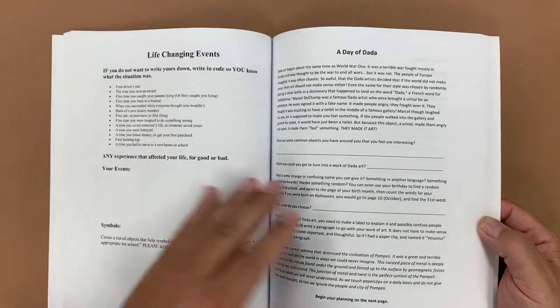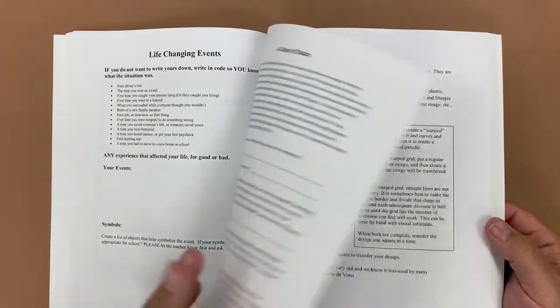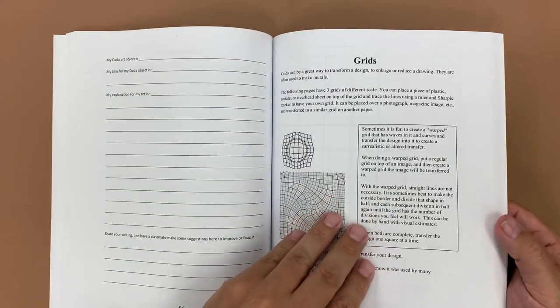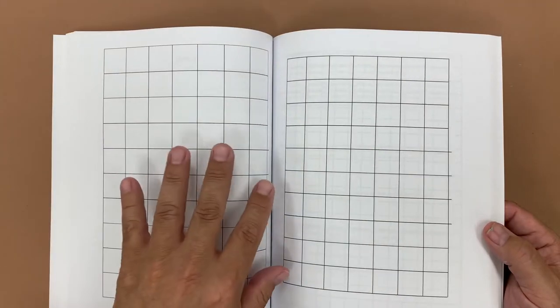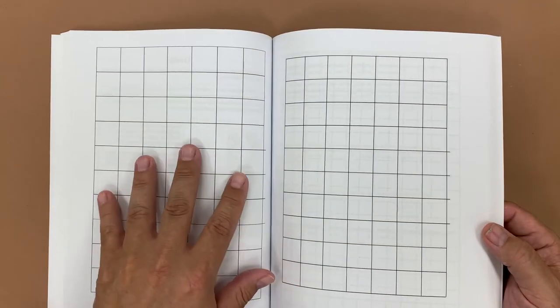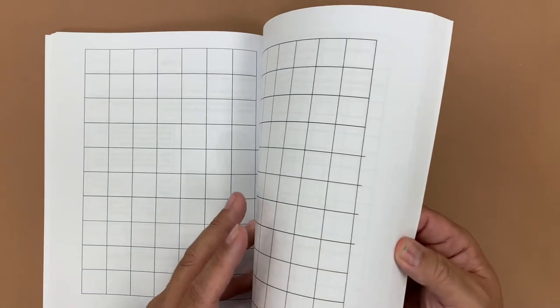Life-changing events, a Dada Day sculpture project. Gridding, so they can actually lay plastic on top of this and then trace it so they can create a transferable grid.